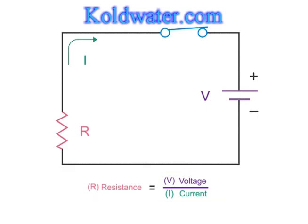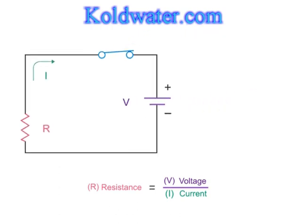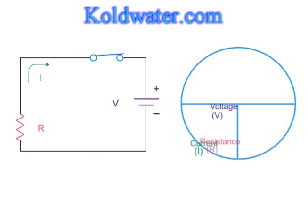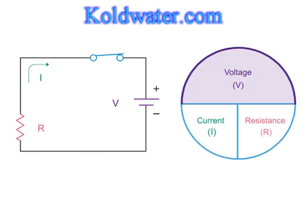A tool to assist in calculating the values associated with the Ohm's law equations is the Ohm's law circle. If you want to solve for voltage, then you multiply current and resistance. If you want to solve for resistance, then you divide voltage by the current. If you want to solve for current, then you divide voltage by the resistance.